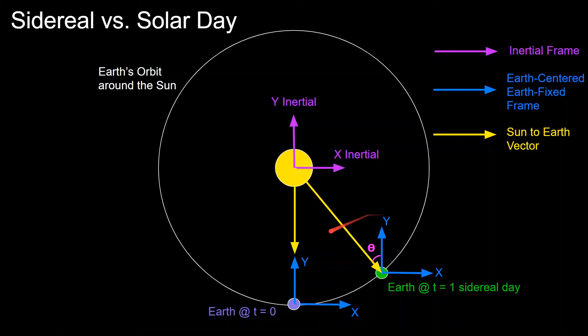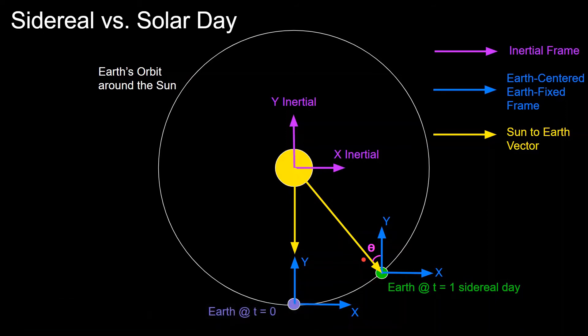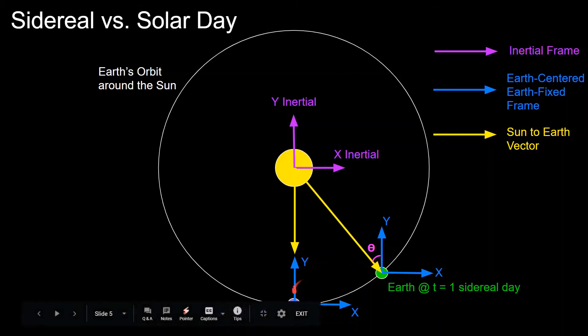Notice that initially the y-axis was pointing directly at the Sun at time equals zero. But now, since the Earth has moved, the y-axis is no longer pointing at the Sun and there's some angle here, θ, that represents the angle between that y-axis and the Sun-to-Earth vector. This is why the sidereal day is different than a solar day, because a sidereal day is one rotation with respect to the inertial frame, but a solar day is one rotation with respect to the Sun. Because the Earth has moved here, the Earth has to rotate a little bit farther in order to again align its y-axis with the Sun.